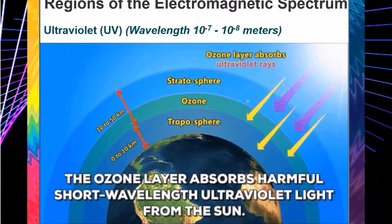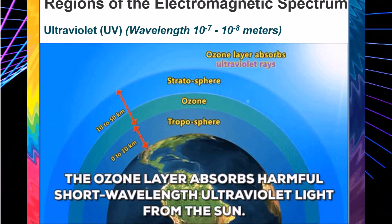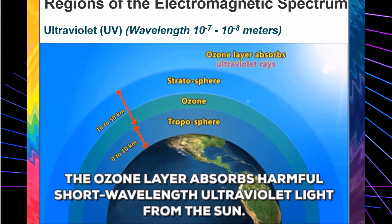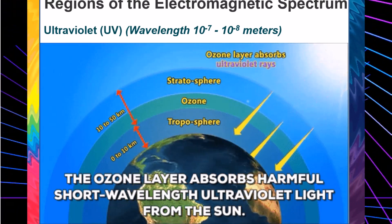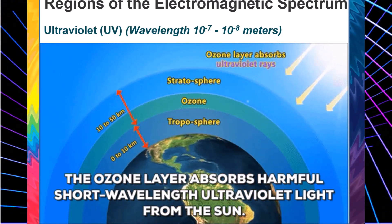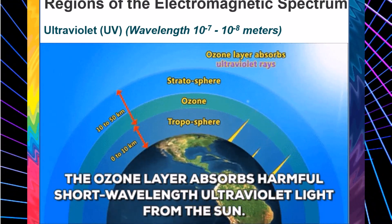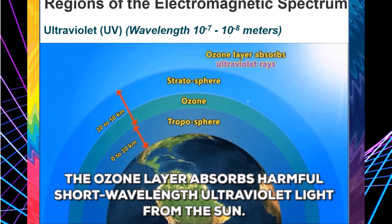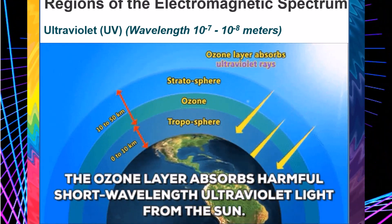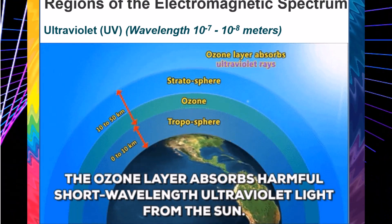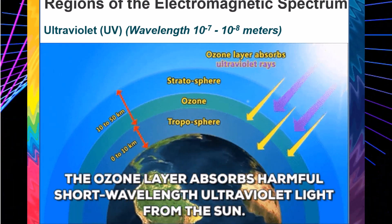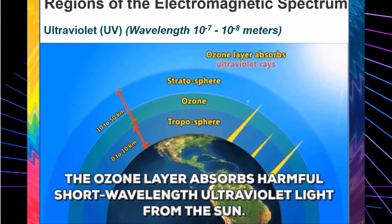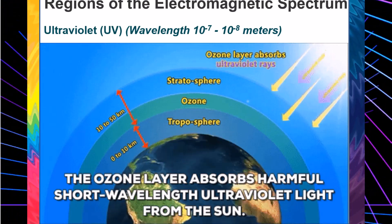Ultraviolet, UV, wavelength 10 to the power of negative 7 up to 10 to the power of negative 8 meters. Ultraviolet light has wavelengths of approximately 1 to 380 nanometer. The sun is a source of ultraviolet energy. The UV portion of the spectrum is subdivided into UVA, UVB, and UVC. UVC rays are the most harmful and are almost completely absorbed by our atmosphere. UVB rays are the harmful rays that cause sunburn. Although UV waves are invisible to the human eye, some insects, such as bumblebees, can see them.